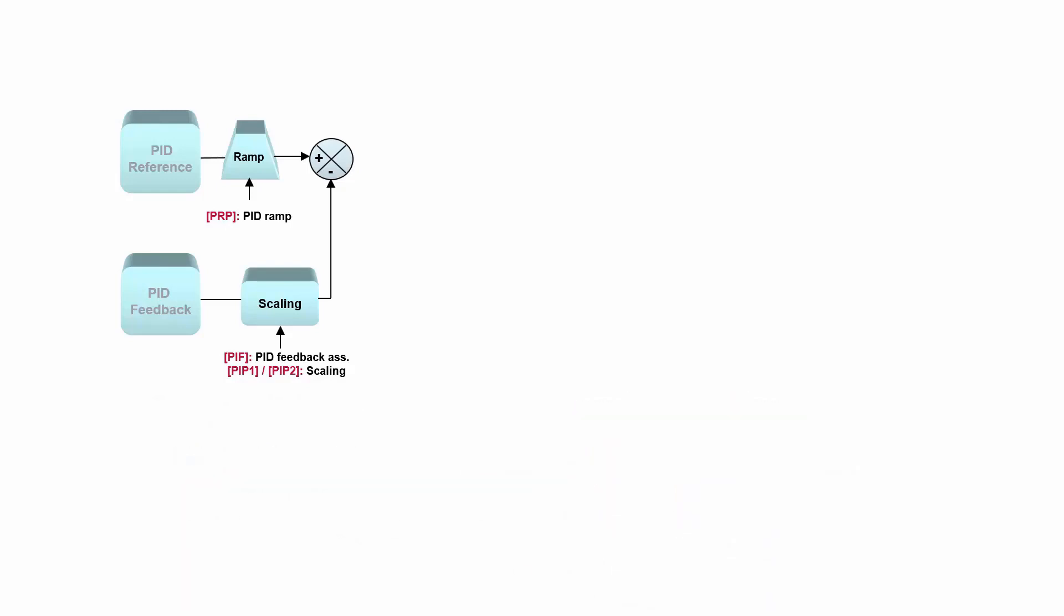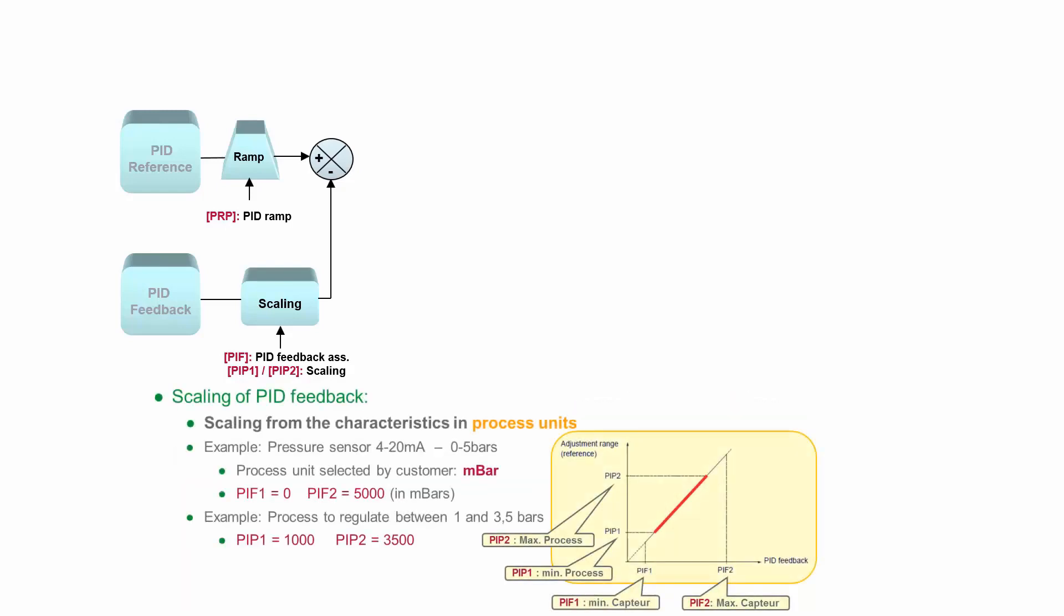Let's move on to scaling. Technically, what you have to do is choose your regulation range inside your process. Usually you will have a certain pressure sensor which can provide a big range, but sometimes you don't need this range and are only using a partial range of regulation.